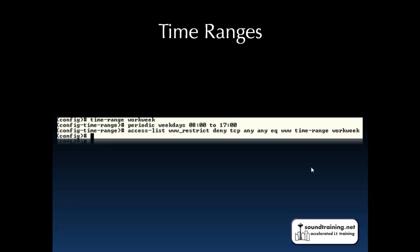We can add time ranges — this is pretty cool. If you want to restrict web traffic during work hours, we create a time range called 'work_week.' We specify the type of time range — in this case, periodic. Weekdays means Monday through Friday, and then we put in the time range itself: 8 a.m. to 5 p.m. Then we use it in an access list: same as always, but at the very end of the line we put 'time-range work_week,' which makes that particular line only in effect during the specified time.